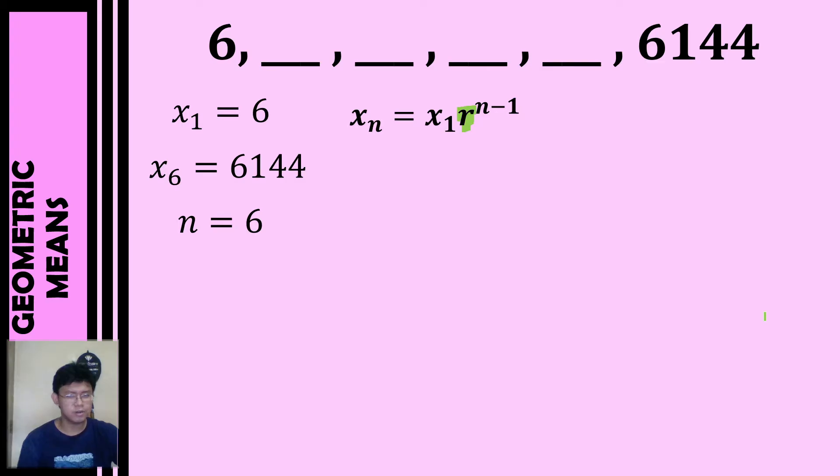Let's solve for our common ratio. We will substitute all the given in our formula. So x sub 6 equals 6 times r raised to 6 minus 1. Let's replace the sixth term by 6,144. So we have 6,144 equals 6 times r raised to 5. Take note, I also simplified the exponent.